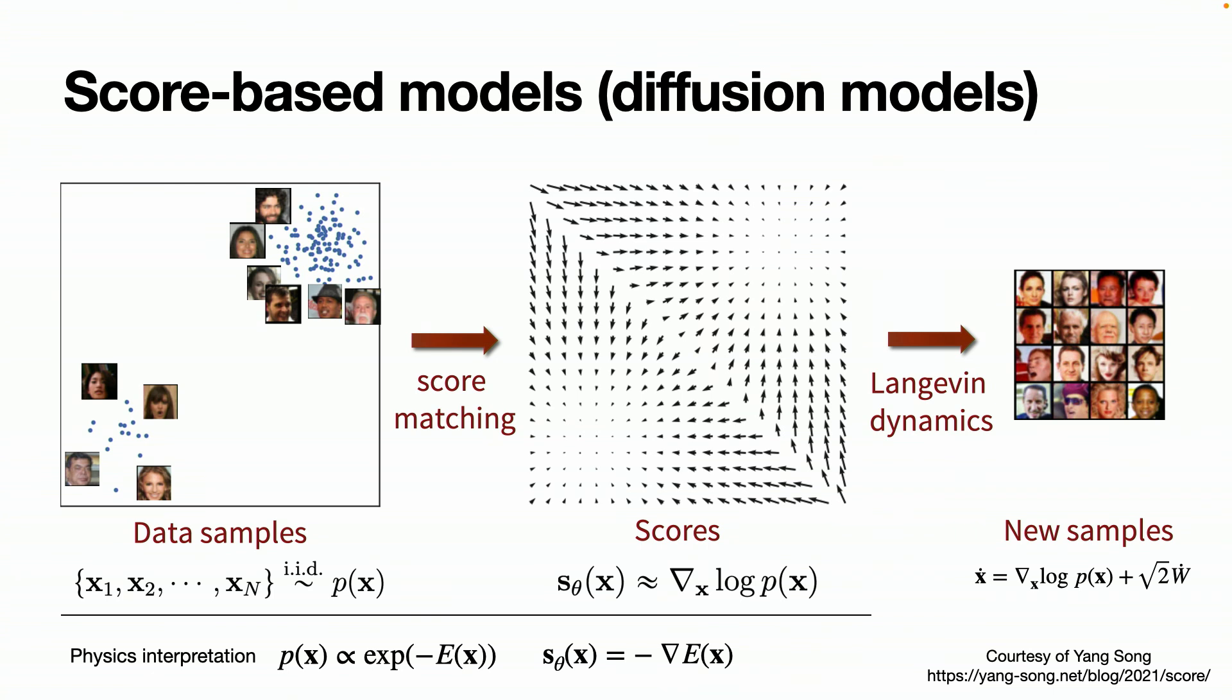For diffusion models or its relative score-based models, they're actually very similar. The basic idea is to view your data samples as some distribution p of x, and you compute the score function, and the way you generate samples is basically run a Langevin dynamics using the score function as a velocity field, adding some Brownian noise, and this dynamics will guide you to converge to a stable distribution, which is exactly the data distribution.